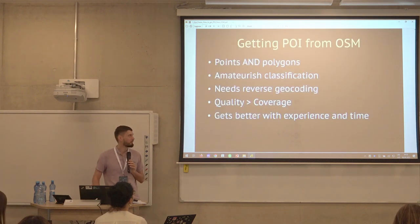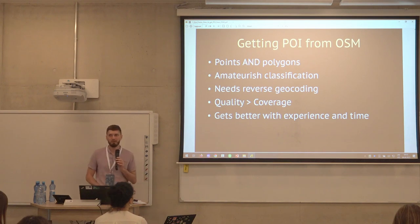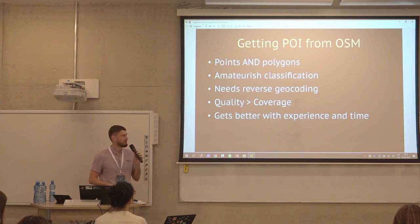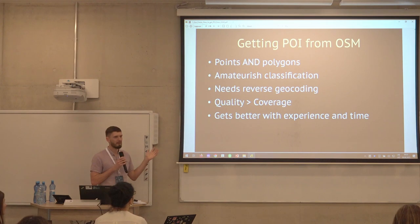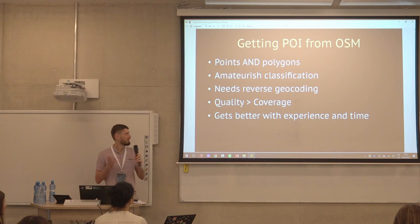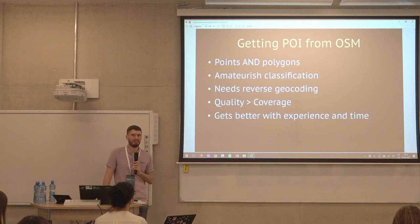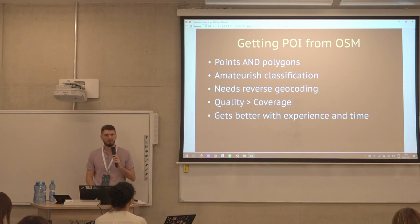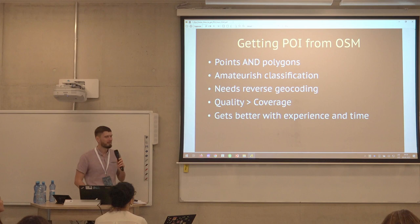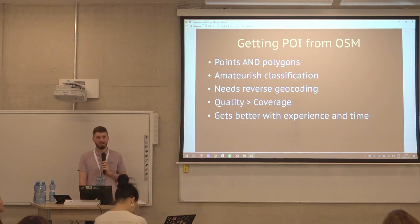To summarize: expect polygons in OpenStreetMap — it's really unusual for datasets, but they give you so much more control, even if it brings frustration. Classification is weird, but OpenStreetMap is well-documented. Don't forget about geocoding. And it gets better — every year with OpenStreetMap you know more things, you process more efficiently, and with time OpenStreetMap itself will get better.